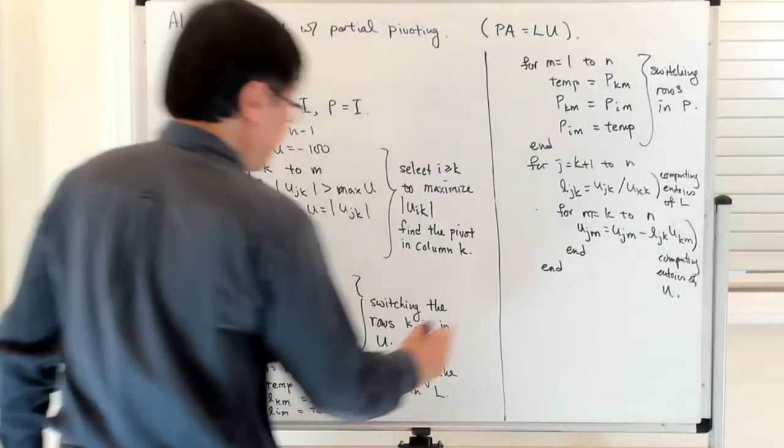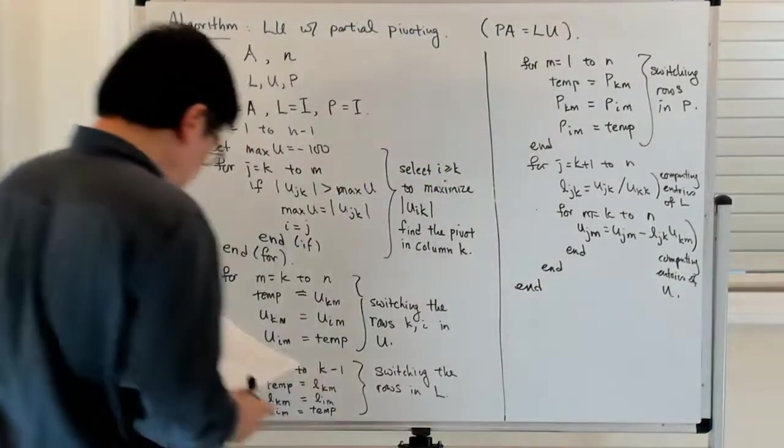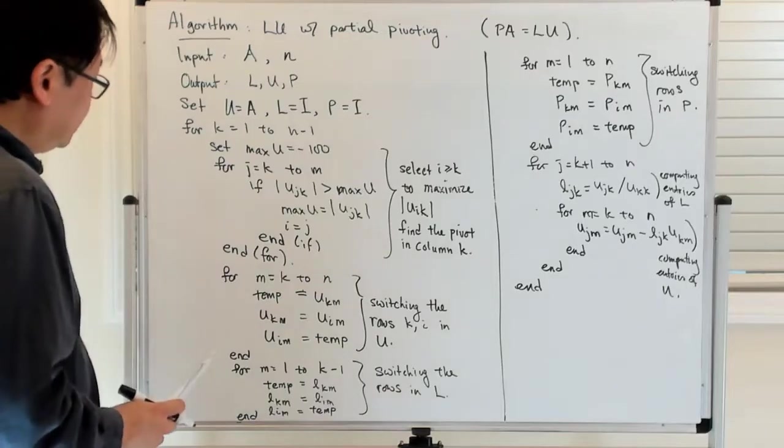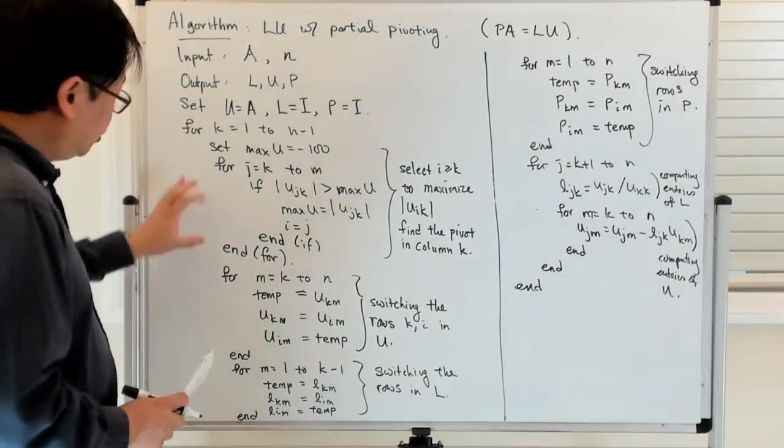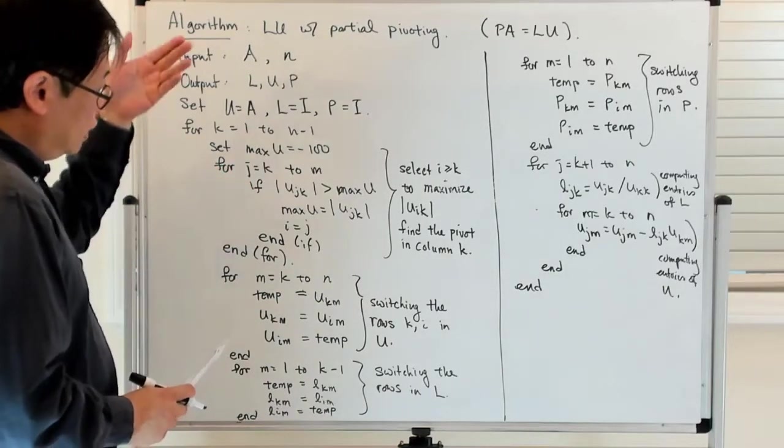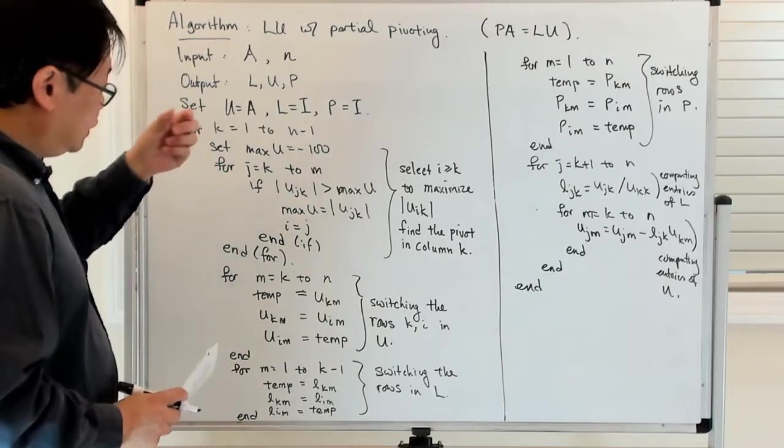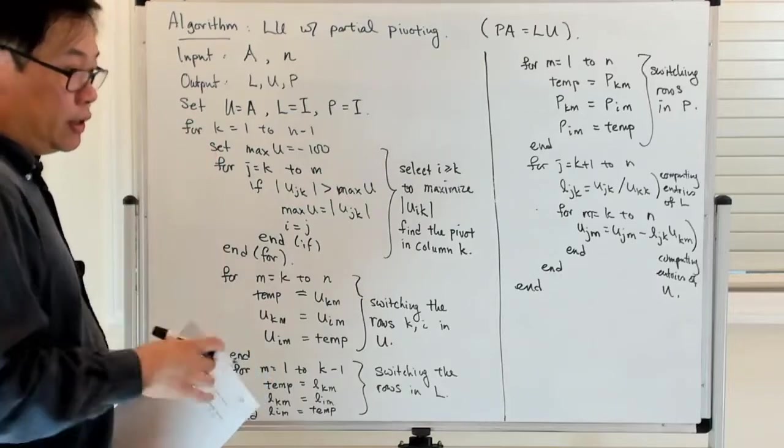So this is computing entries of L, and then this is computing the entries of U. You end this for loop, and then there's one final outer loop which I'm ending.